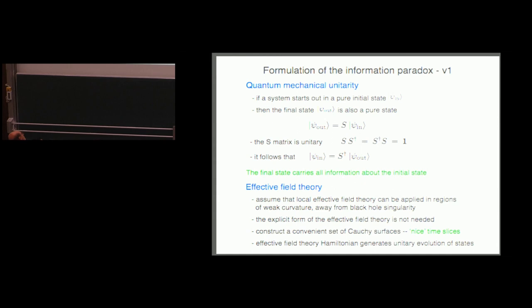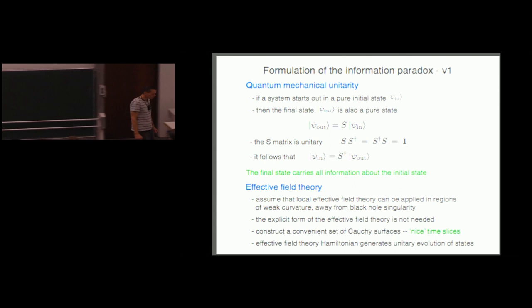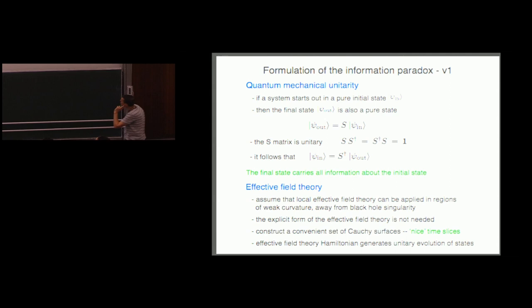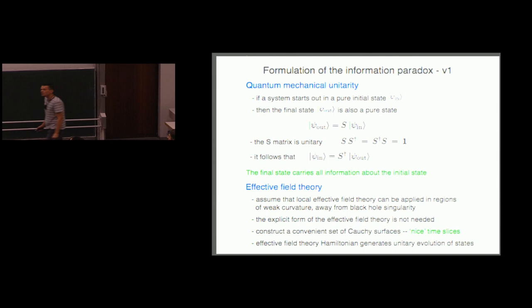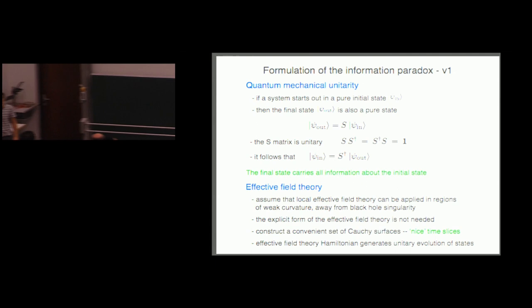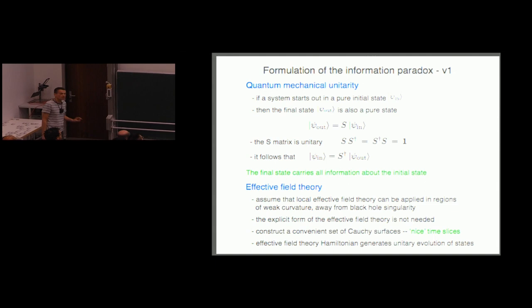We're going to see that we have a problem, and I'm going to give two formulations of the paradox. The first is pretty much the same as what Kyriakos told us about yesterday, and I'll show you the same diagram. The second is a bit of an elaboration: if you have duplication of information or quantum cloning in your space-time, that is a problem for quantum mechanics, and I'll show a simple Gedanken experiment where that problem would manifest itself.